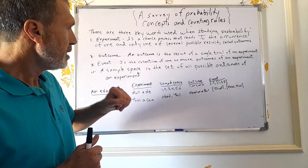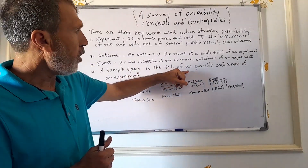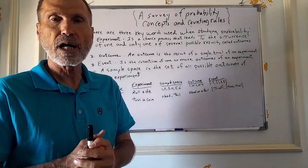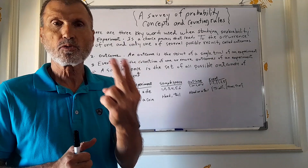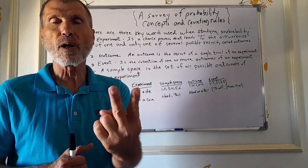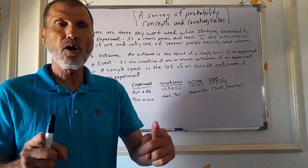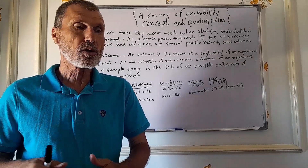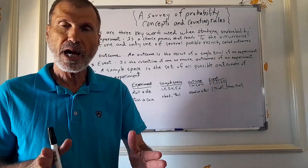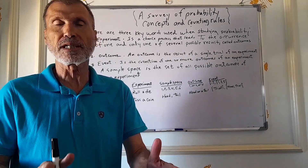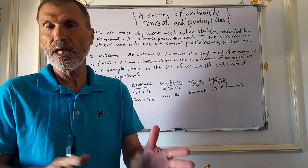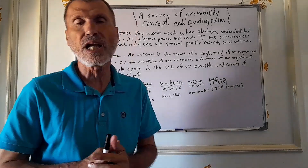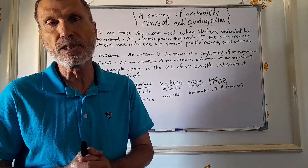Sample space is the set of all possible outcomes of an experiment. When we toss a coin, we have two possible outcomes. The sum of all outcomes is called sample space. If we roll a die, we have six possible outcomes — namely one, two, three, four, five, six — and the sum of all these possible outcomes is called the sample space.